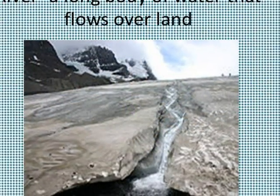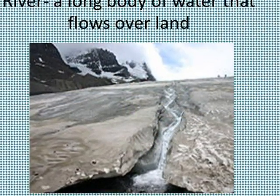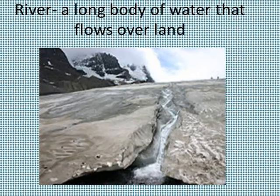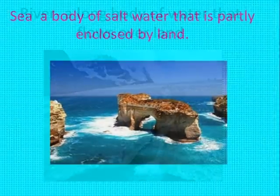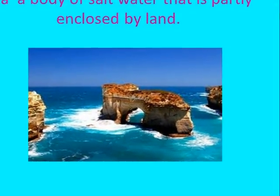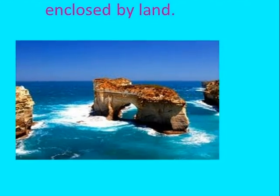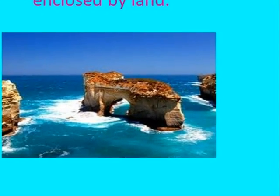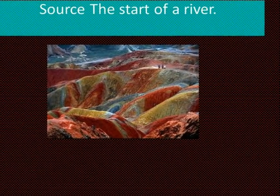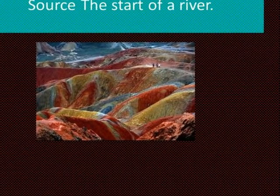A river is a long body of water that flows over land. A sea is a body of salt water that is partly enclosed by land. A source is the start of a river.